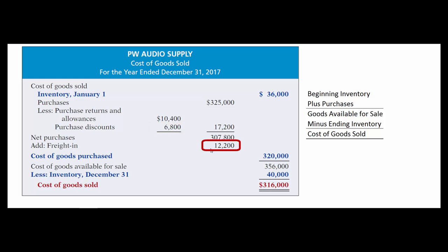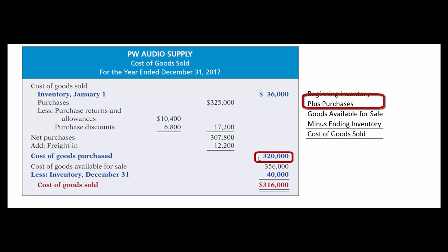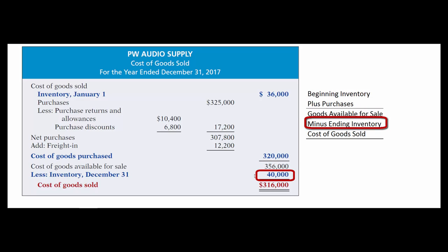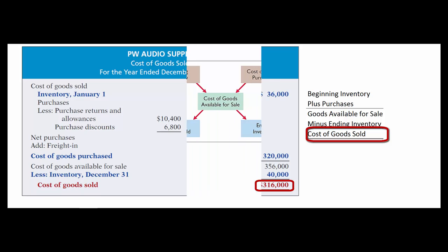Add in the freight costs, and that gives them the total goods purchased. Beginning inventory plus purchases gives them total goods available for sale, minus their ending inventory gives them the cost of goods sold for the year.